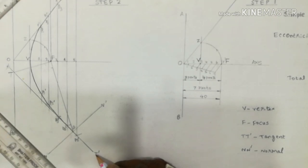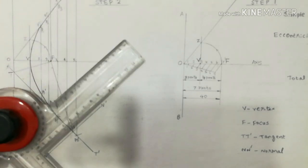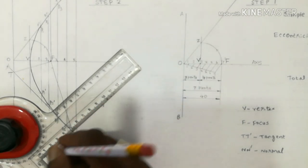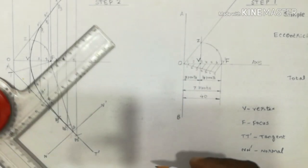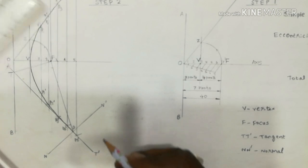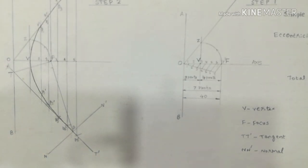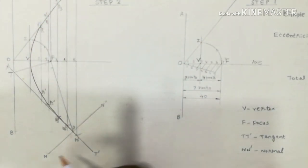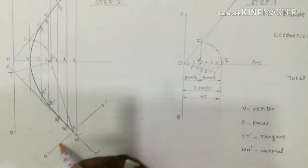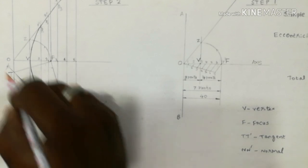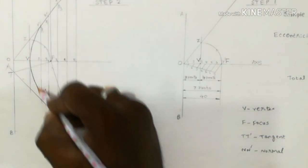With the same setting, draw a line passing through point P perpendicular to the tangent. This line is marked as N–N' and is called the normal. Label the hyperbola curve as H, and the tangent line as T–T'.